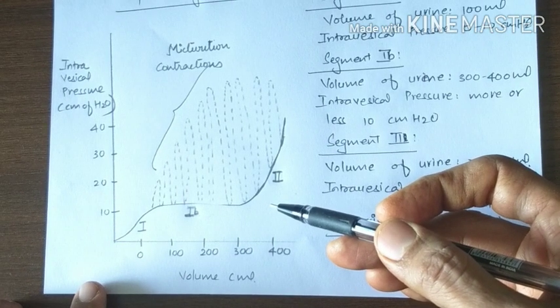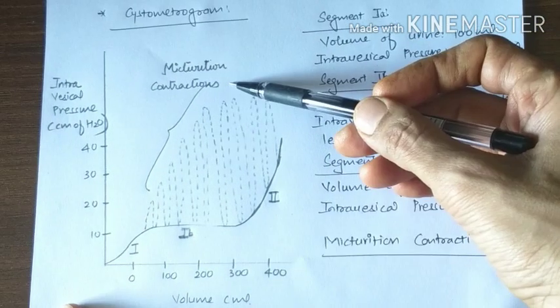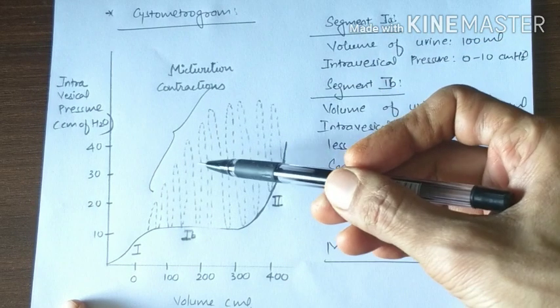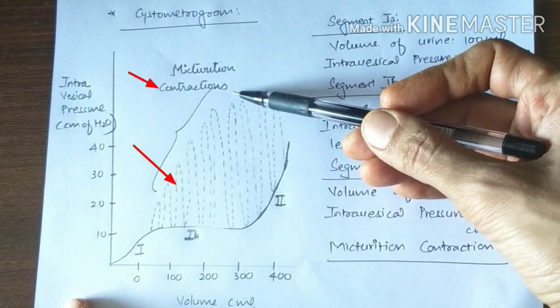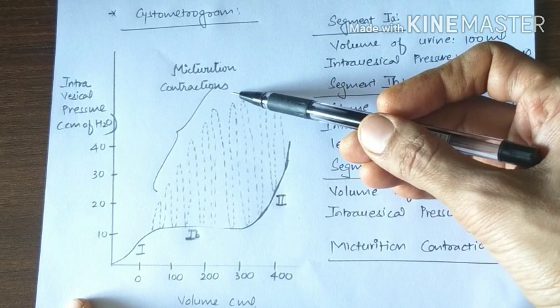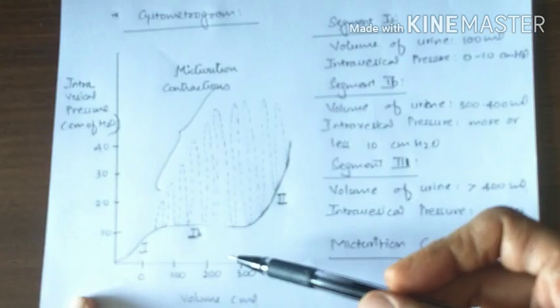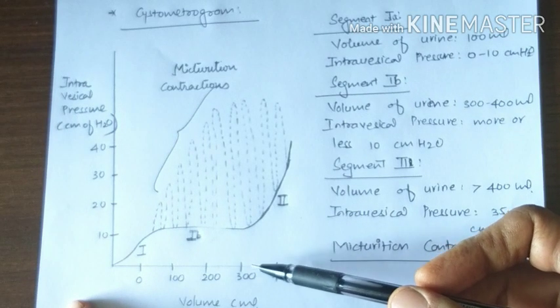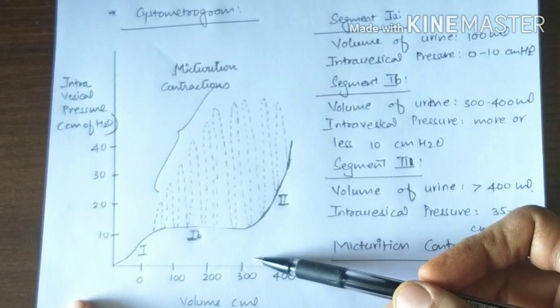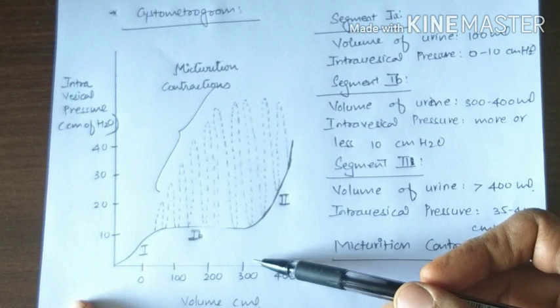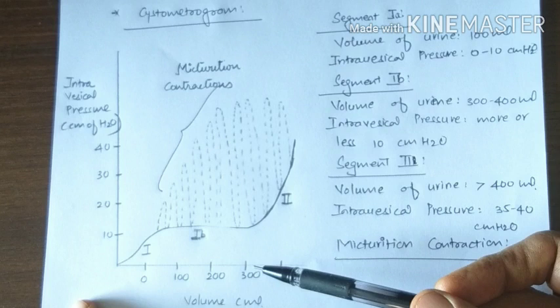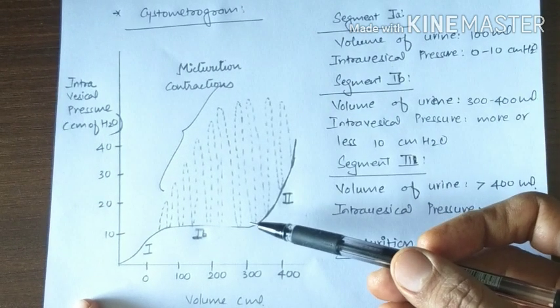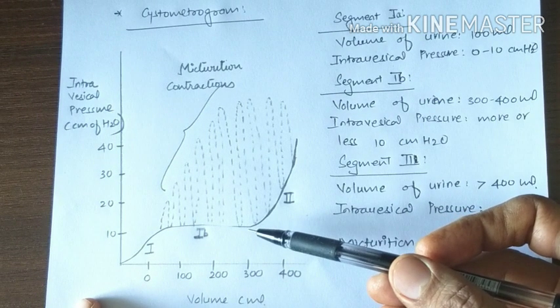In this graph, these are micturition waves or micturition contractions. These waves are superimposed on the tonic pressure changes when the bladder fills, due to periodic acute rises in pressure. They last for a few seconds or more than a minute.